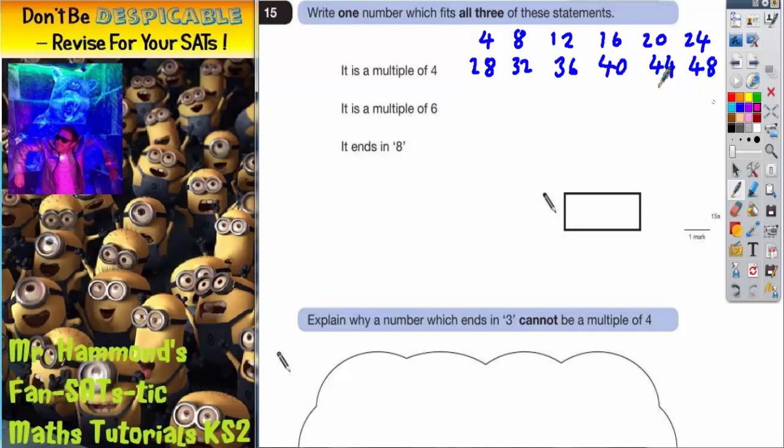So which of these numbers are in the six times table? Well, four isn't, eight isn't, 12 is, 16 isn't, 20 isn't, 24 is, 28 isn't, 32 isn't, 36 is in the six times table, 40 isn't, 44 isn't, and 48 is. So actually we're only interested in those four numbers.